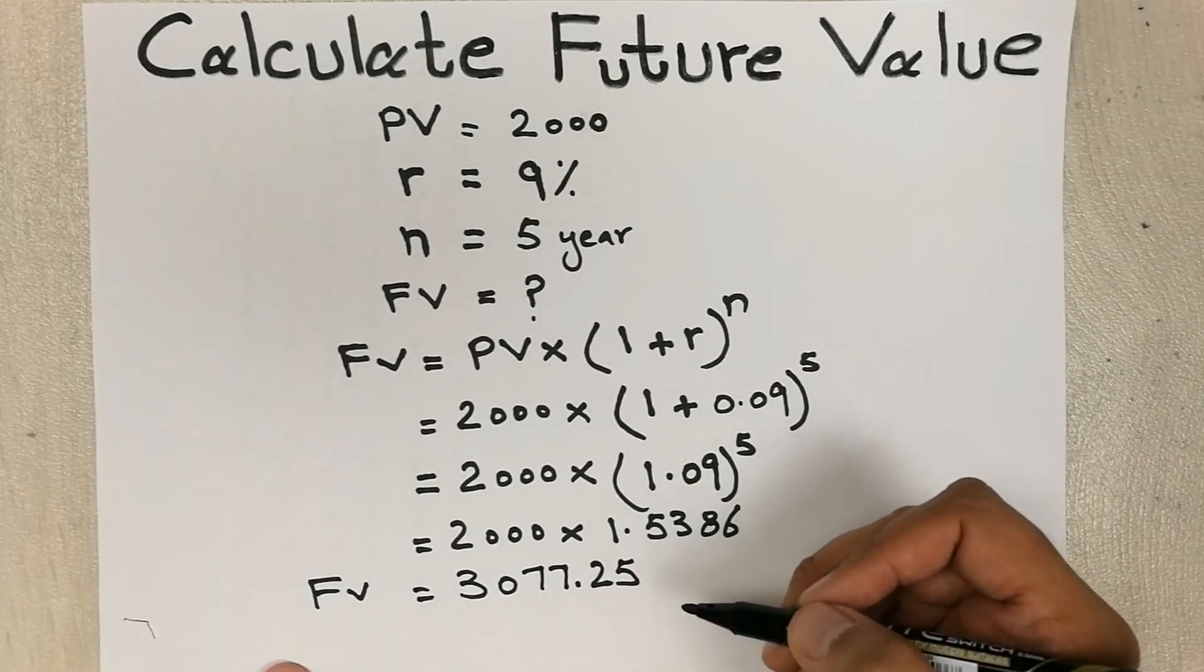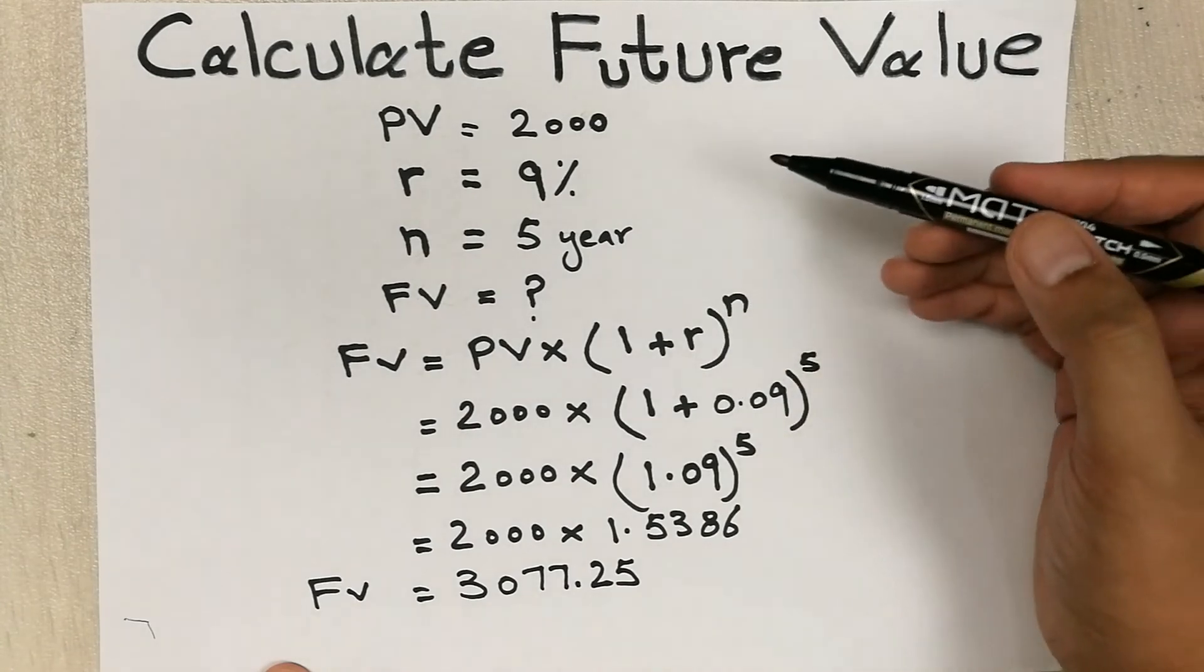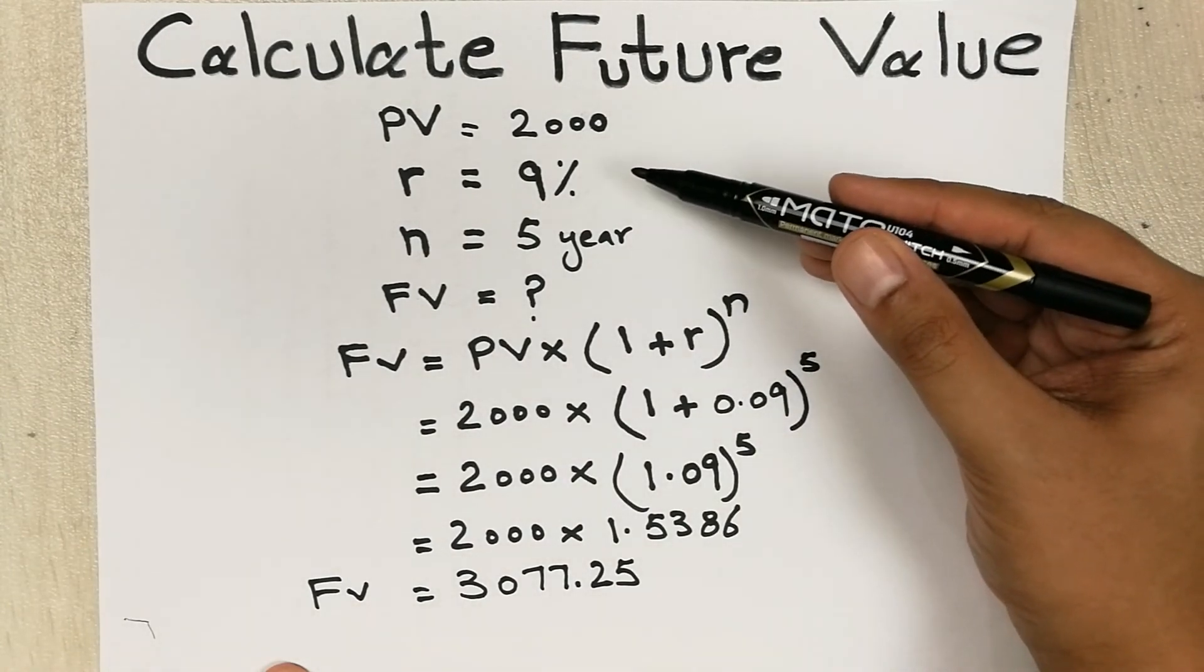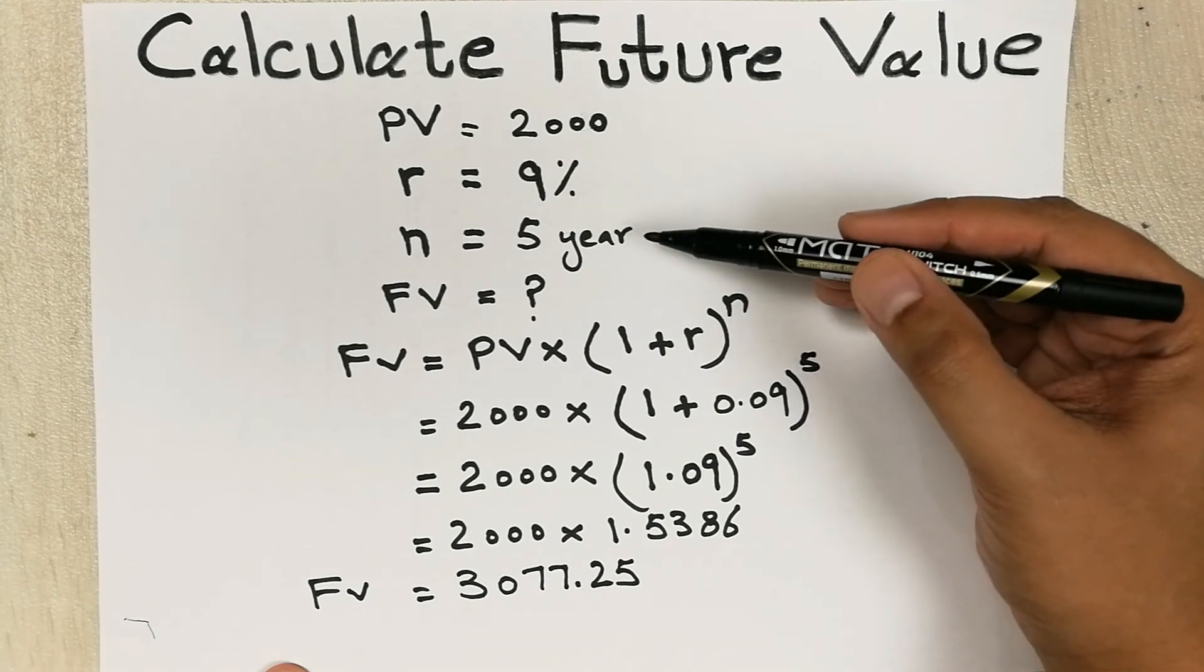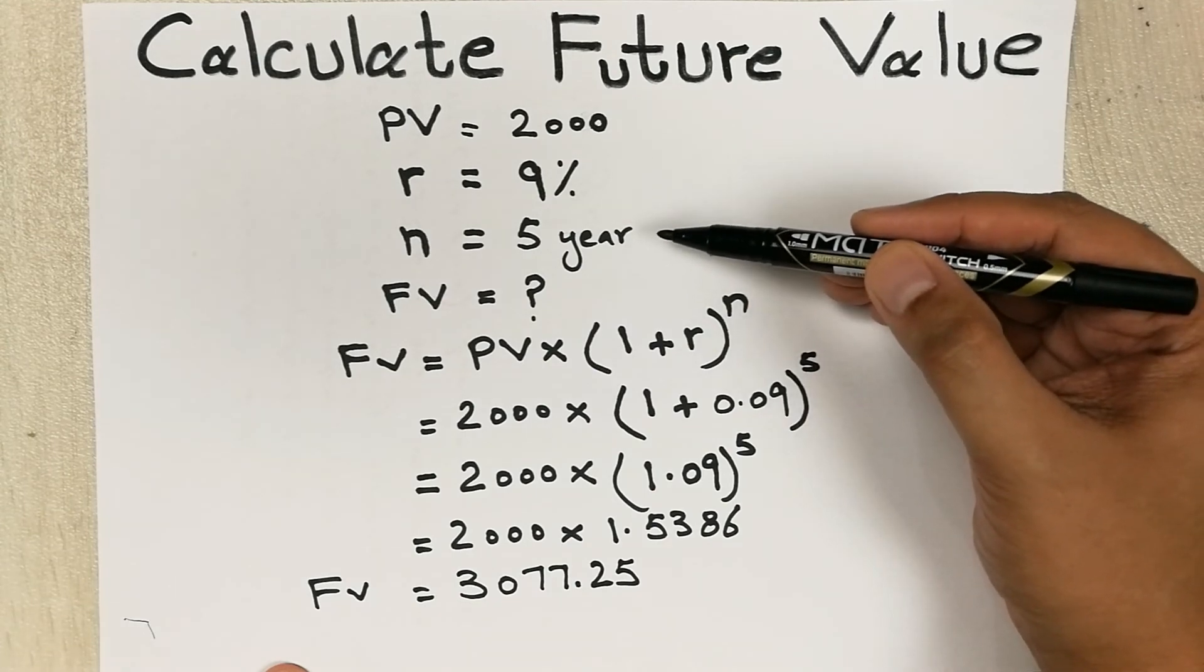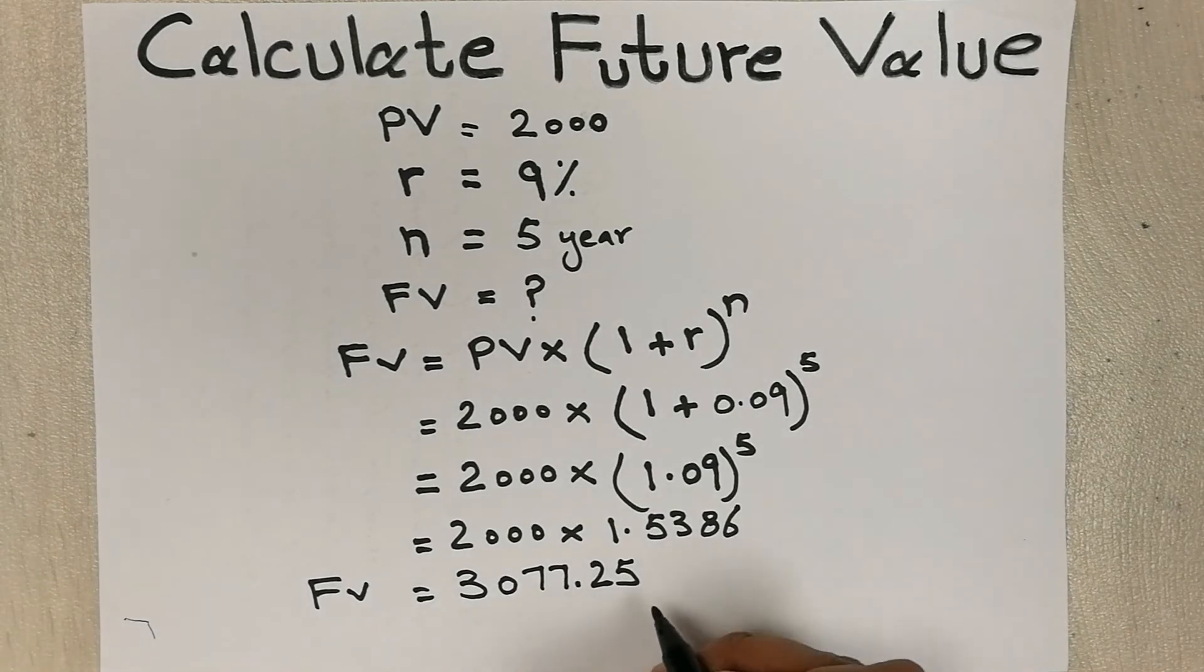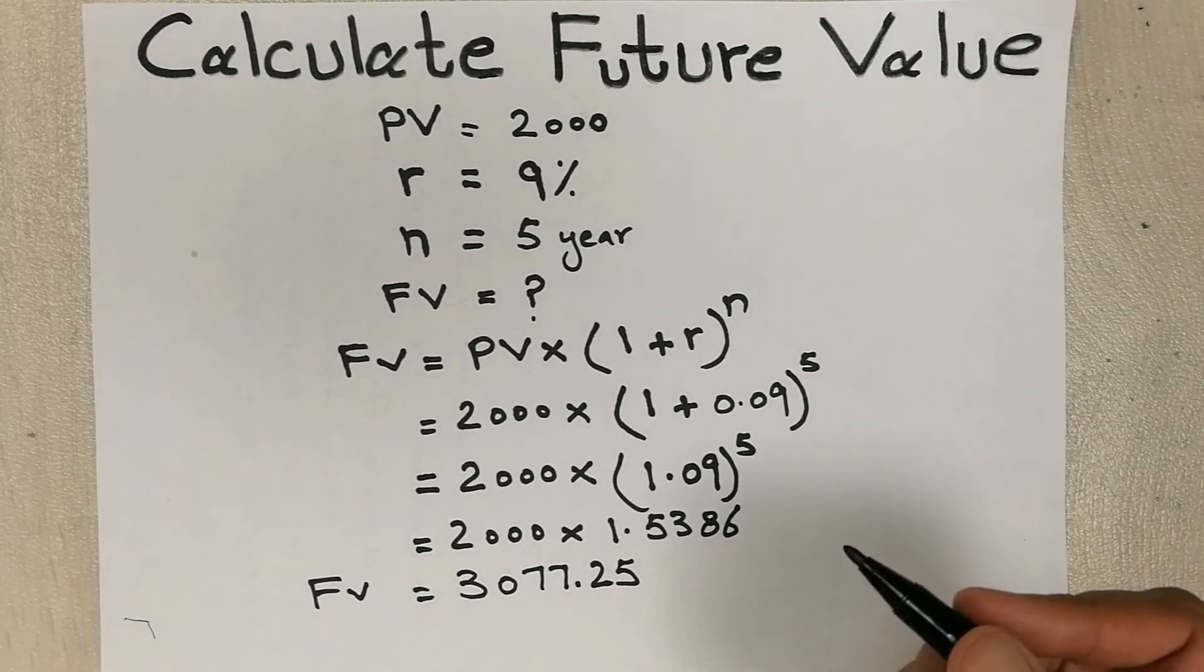It means if we invest 2000 dollars today at 9 percent interest rate compounded annually for five years, we will have 3077 dollars and 25 cents after five years. This is how you can calculate the future value.